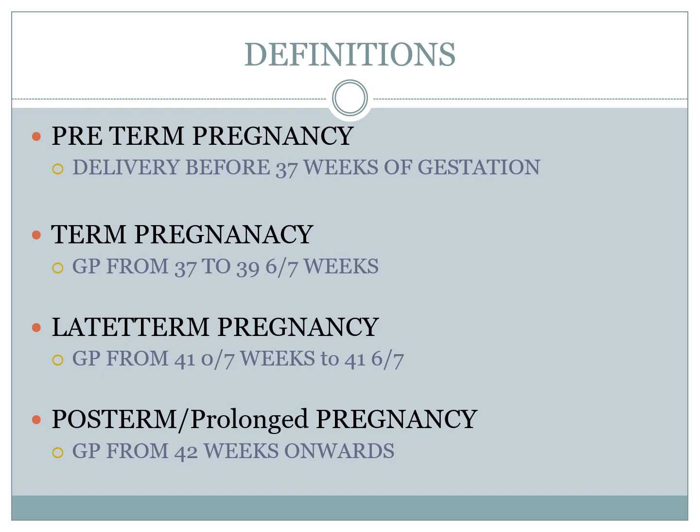We start with definitions. Preterm pregnancy is any delivery before 37 weeks of gestation. A term pregnancy is from 37 to 39 weeks and 6 days. Late term is 41 weeks to 41 and 6. Post-term or prolonged pregnancy, which is the topic of our lecture, is 42 weeks onwards.